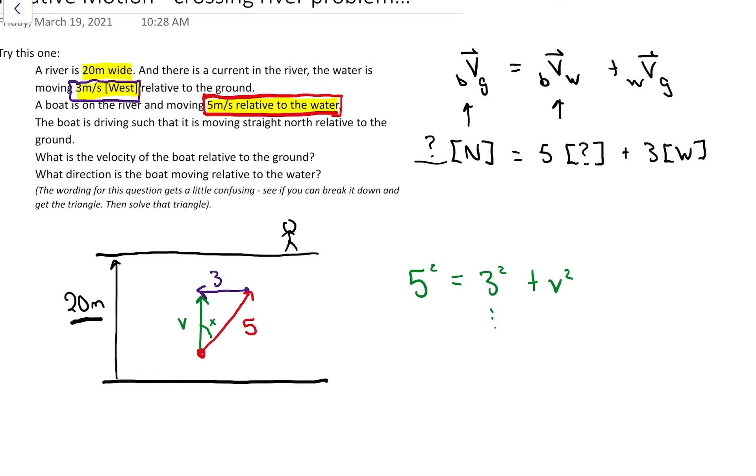Or if you're on your toes, that is a 3, 4, 5 triangle. So I know that the number part of the velocity has to be 4.